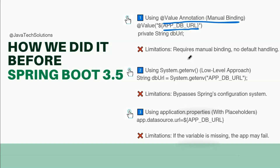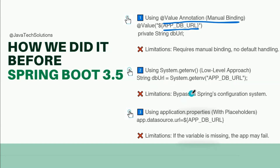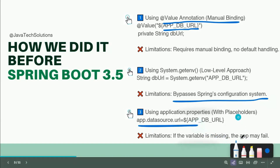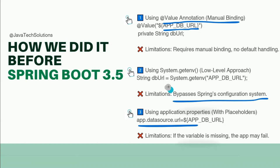The second approach is using `System.getenv()`, which is a low-level approach with no dynamism. You pass the key to retrieve the value, like `DB_URL`, but the limitation is that it bypasses the Spring configuration system. The third approach uses placeholders in `application.properties`, but if a variable is missing, the app may fail. These were the approaches used before Spring Boot 3.5.